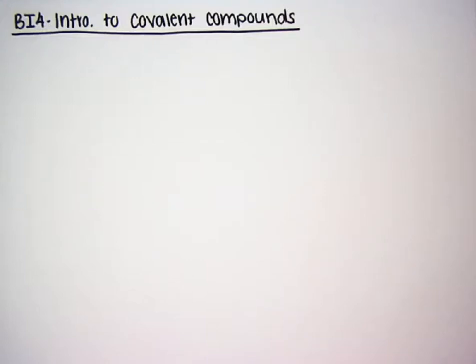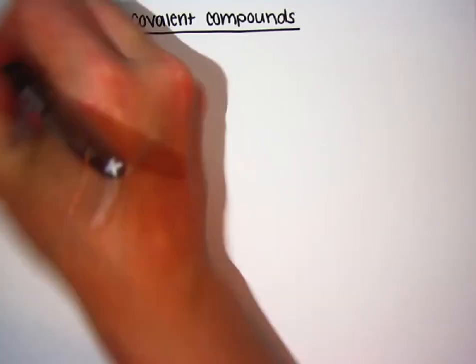Big Idea 4 is all about covalent compounds. In this lesson we're going to talk about what covalent compounds are and the two different types of covalent compounds: polar covalent and non-polar covalent.